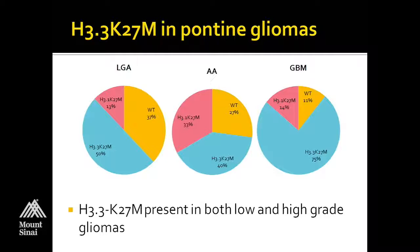If we look at pontine gliomas centered in the pons and how often they're associated with histone mutations, some interesting patterns emerge. If you see a diffuse pontine glioma that looks like a low-grade astrocytoma, about two-thirds will harbor a histone mutation. If it looks like an anaplastic astrocytoma, more of these tend to have the H3.1 mutation versus H3.3, but overall about three-quarters will have a histone mutation. If it looks like a GBM, over 90% are going to have a histone mutation in the pons.